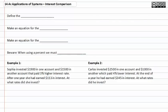When comparing interest, define the variables first. Then make an equation for the investment. Then make an equation for the interest, and remember when using a percent we must convert to a decimal.